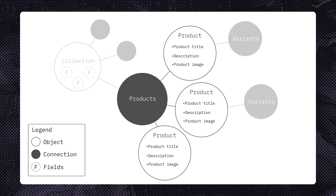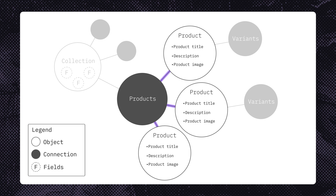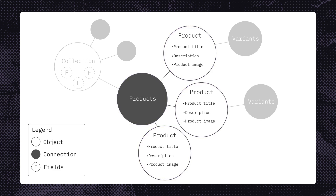Since you're now querying for multiple objects, you'll need to query a connection. Connections contain edges and nodes. Nodes represent entities, and edges represent relationships between entities. So to get information about the products in the collection, you could query either edges or nodes associated with the collection. We'll dive deeper into this later in the course.